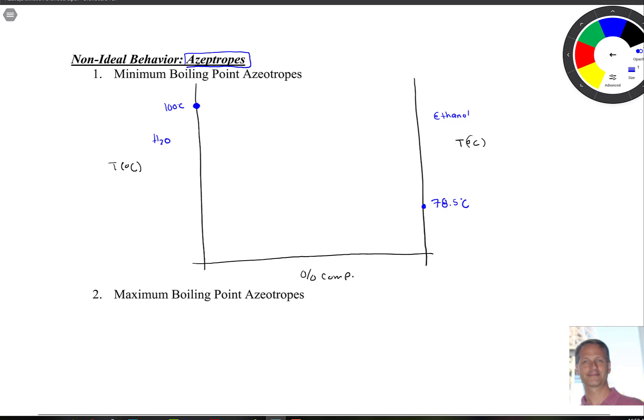So it turns out that in a minimum boiling point azeotrope, minimum means there's some boiling point that's lower than expected. So in this situation, at some percentage, we actually end up seeing a slight repulsion between the two different solvents. So if there's an extra repulsion, then that would mean that the boiling point's a little bit lower.